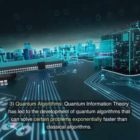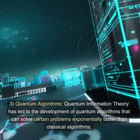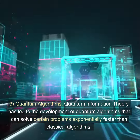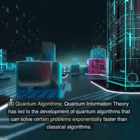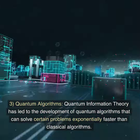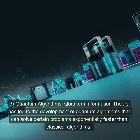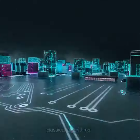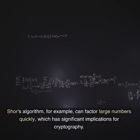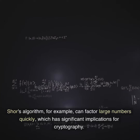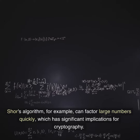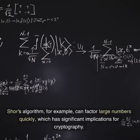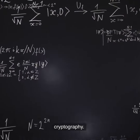3. Quantum algorithms. Quantum information theory has led to the development of quantum algorithms that can solve certain problems exponentially faster than classical algorithms. Shor's algorithm, for example, can factor large numbers quickly, which has significant implications for cryptography.